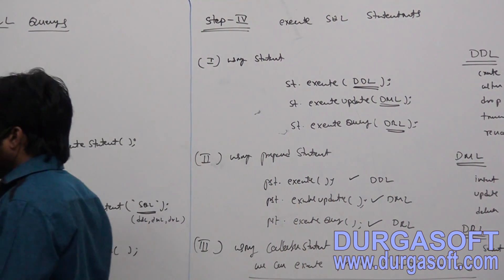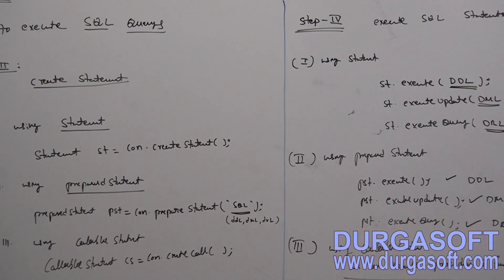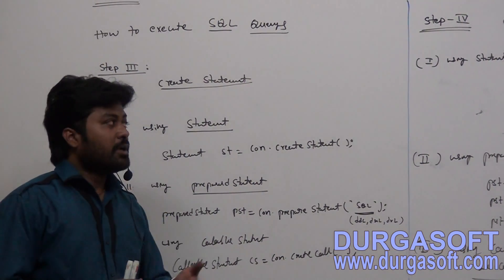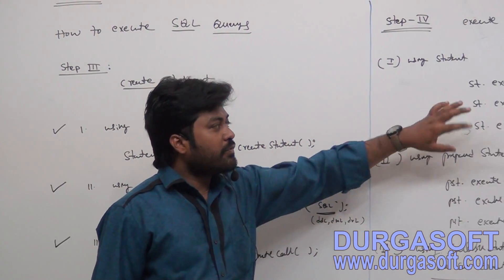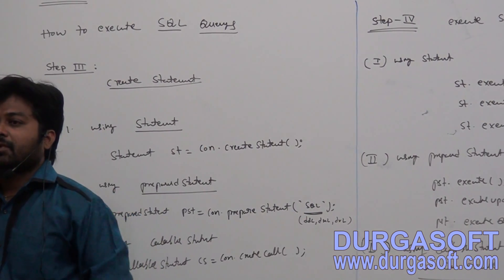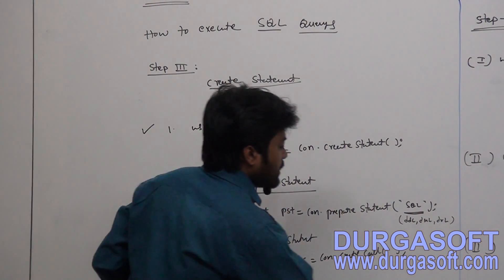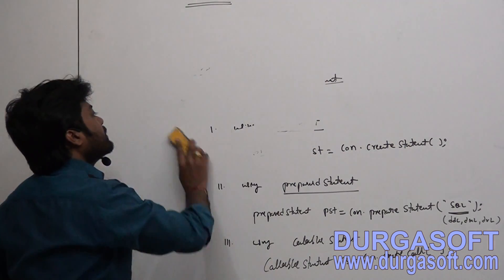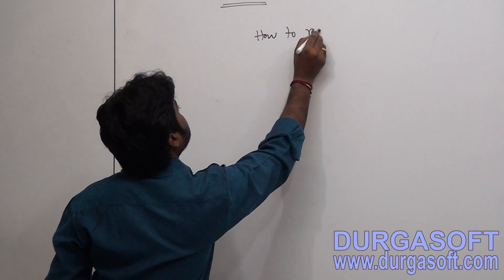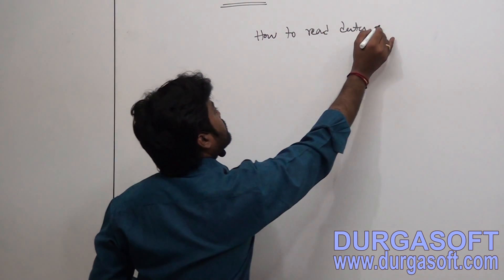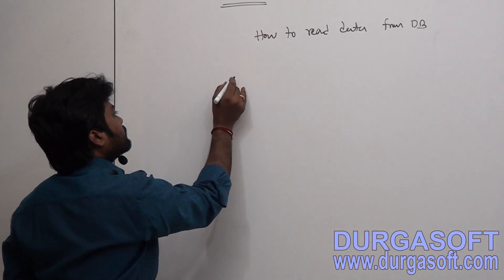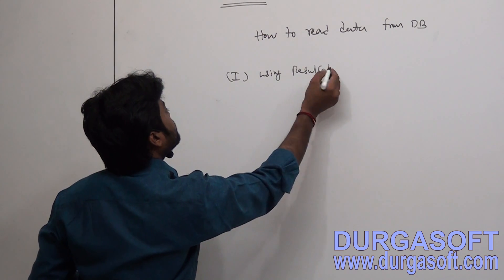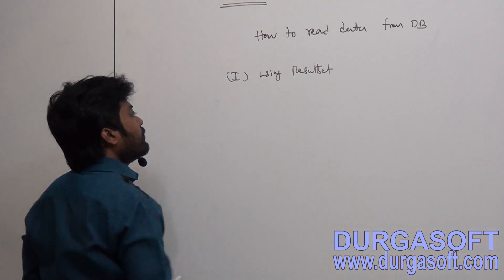This is the fourth step, and we have one more step here. To retrieve data, there is one more class — step 5. In case you require data from the database, you need to get that data. To get the data, we have one more interface: ResultSet. Using ResultSet, we can read data from the database.